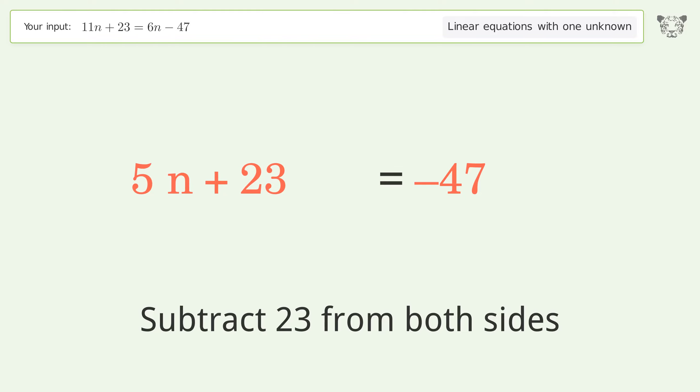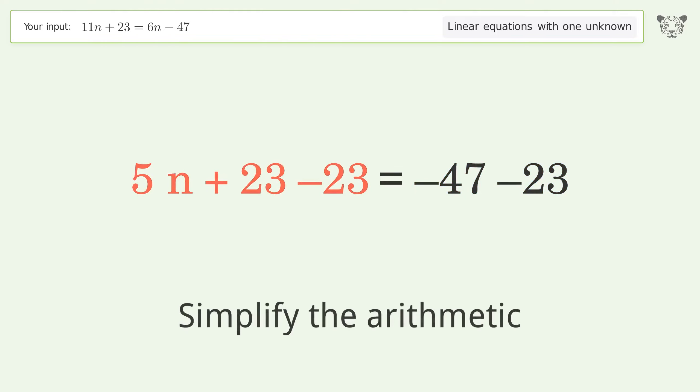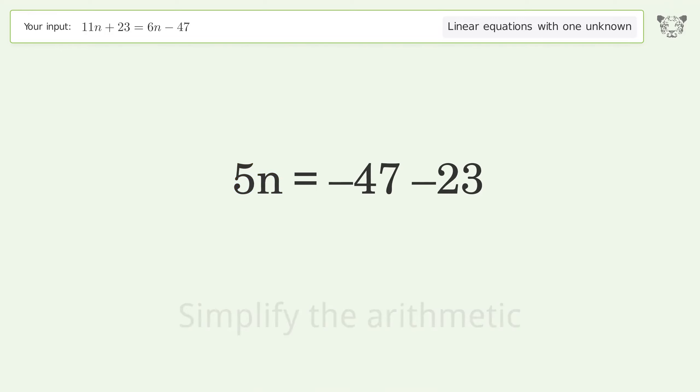Group all constants on the right side of the equation. Subtract 23 from both sides. Simplify the arithmetic.